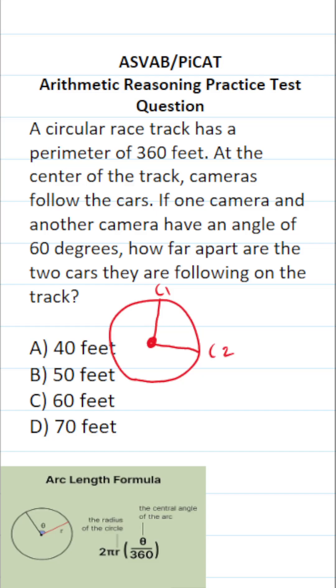We know that the angle between the two cameras is 60 degrees, and we want to know how far apart these two cars are on the racetrack. And I just highlighted that distance in yellow. Now, as it happens, this distance I highlighted in yellow is called the arc length of a circle.